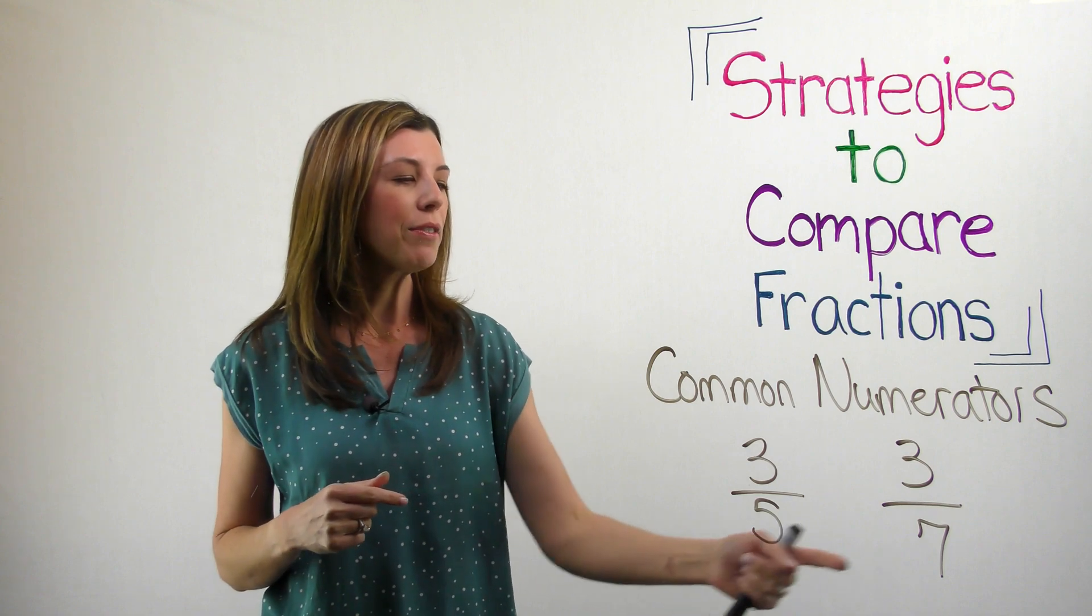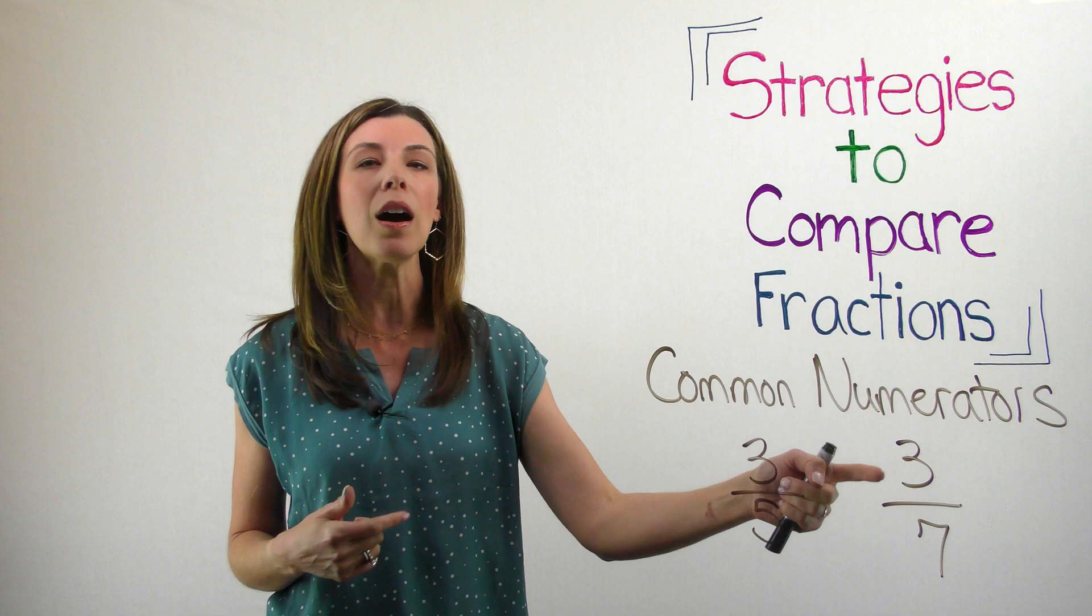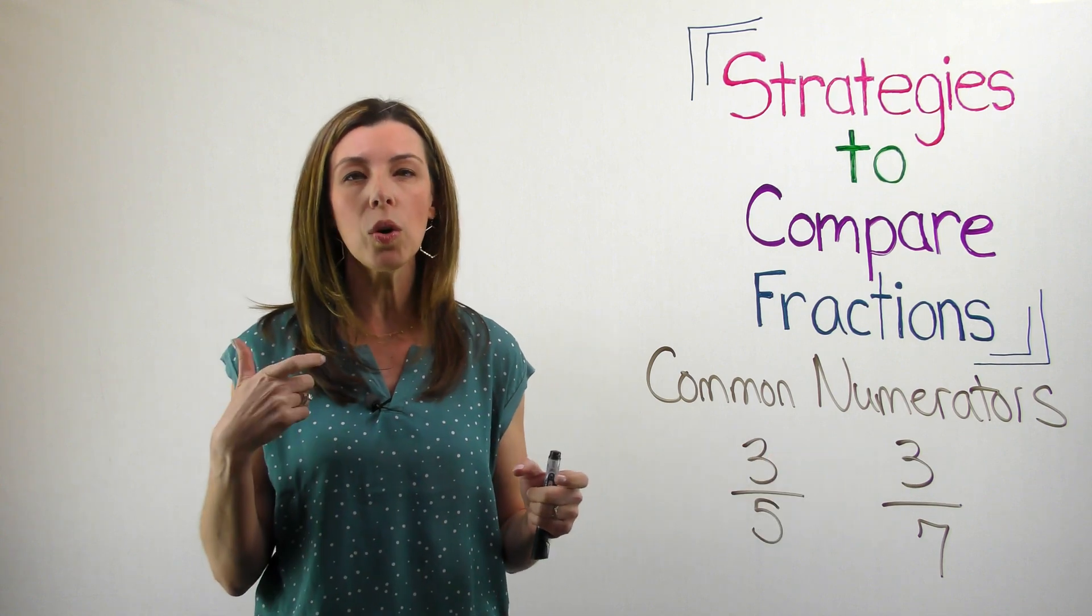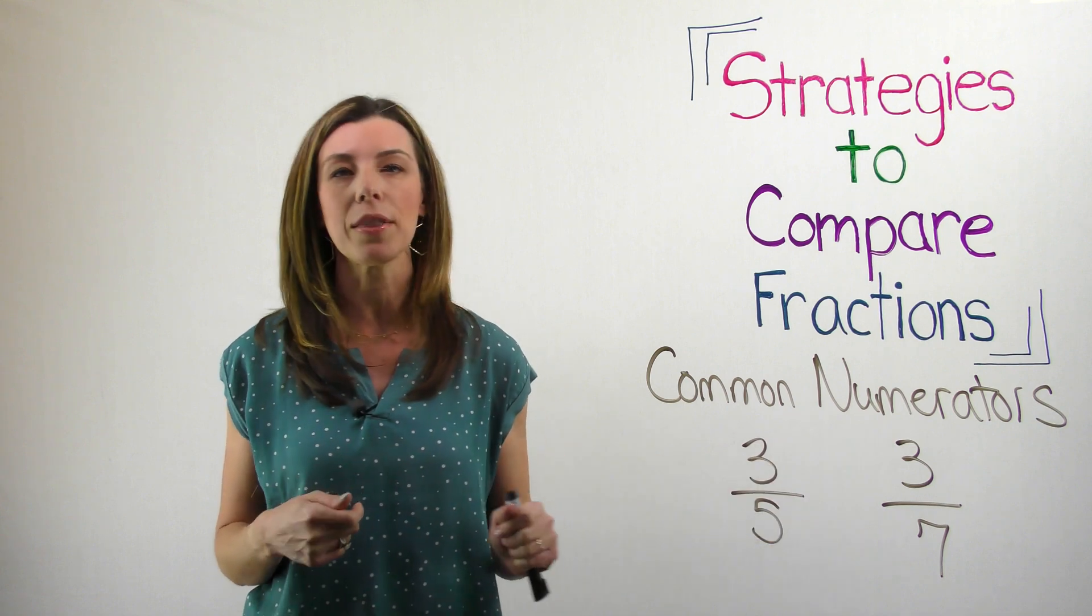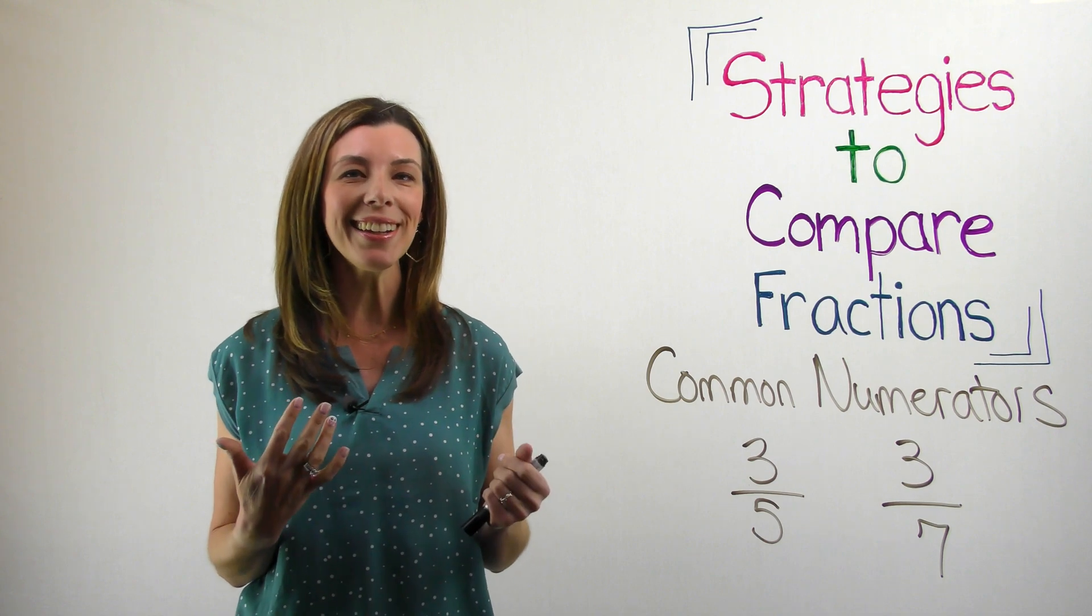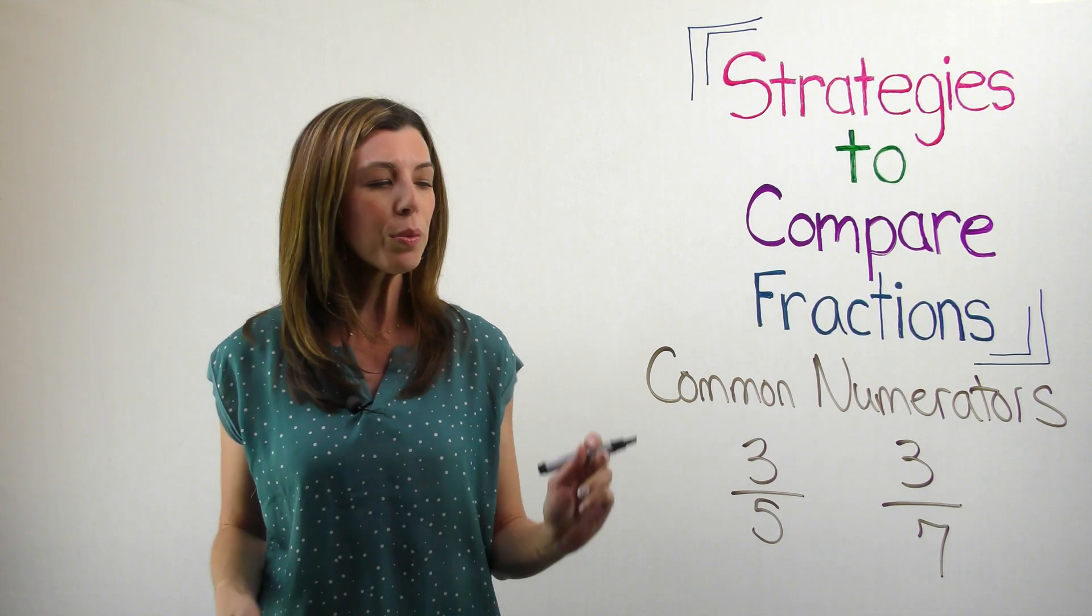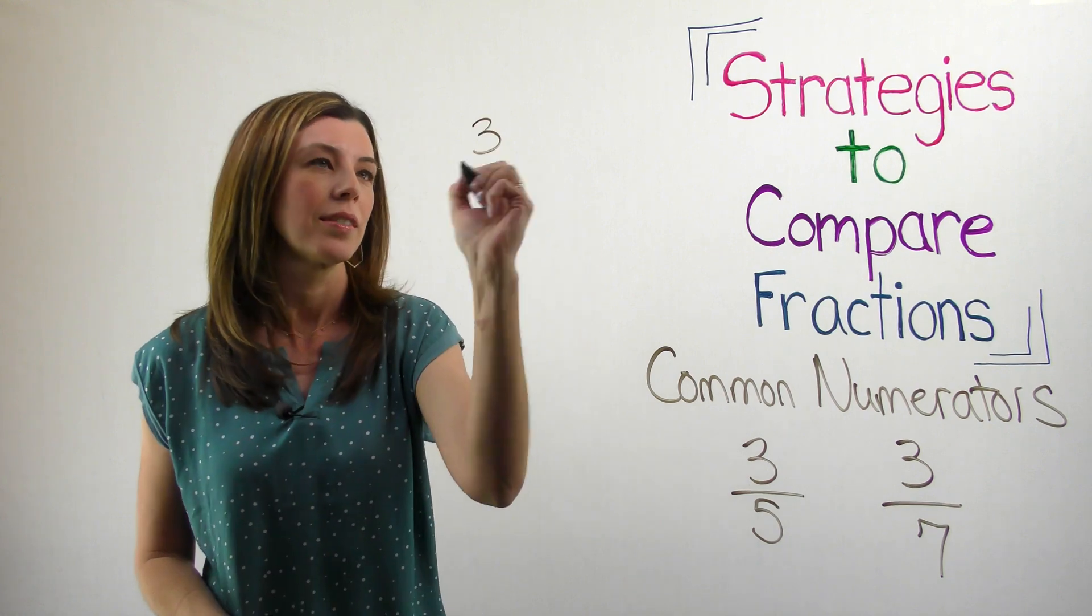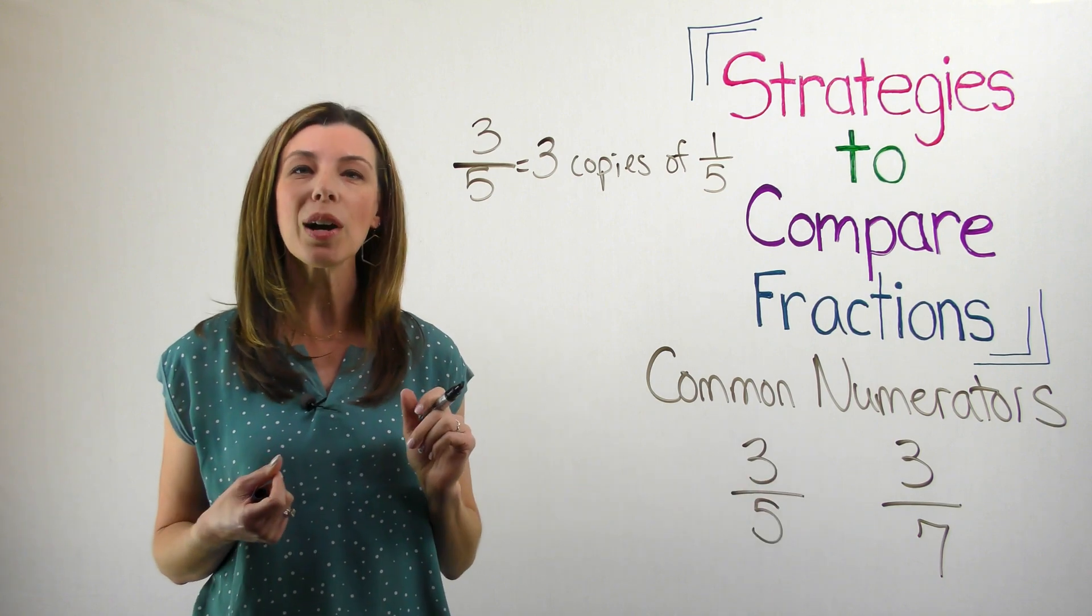You'll notice here I've got three-fifths and three-sevenths, and you'll notice that they both have a common numerator. Remember, this number on top, or the part of the whole, is called the numerator. This is our denominator down at the bottom. If I think of these in terms of the unit fraction, I can actually figure out which one is larger based on that unit fraction. Three-fifths is the same as three copies of one-fifth. I can also think of three-sevenths as three copies of one-seventh.